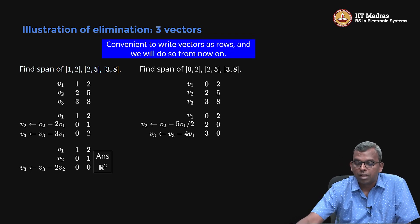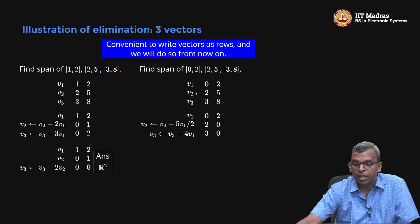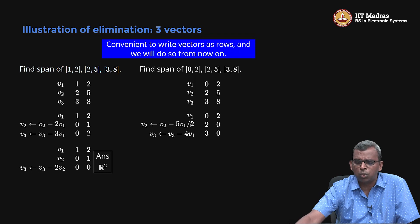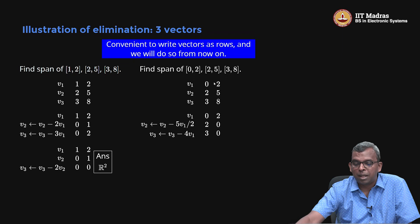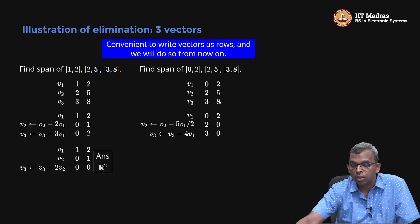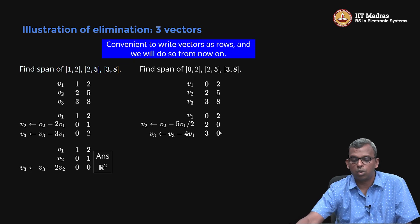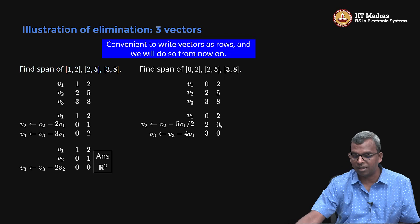Notice what I have done here. V1 is as such. V2 gets replaced with V2 minus 5V1 by 2. How did I come up with this 5V1 by 2? Notice that will eliminate this to 0. Multiply by 5 by 2 and then subtract. This guy will go to 0. That is the idea I am coming up with this 5 by 2. So you get 2, 0 here. What about 3, 8? How do I eliminate this 8? 8 minus 4 into 2. So that is what I do here. V3 minus 4V1 and that becomes 3, 0. So notice how the elimination process just brings in these 0s.